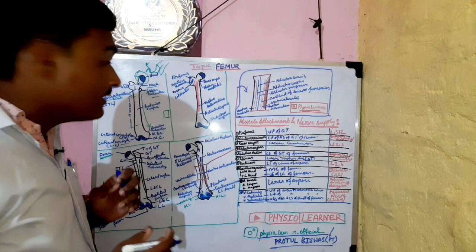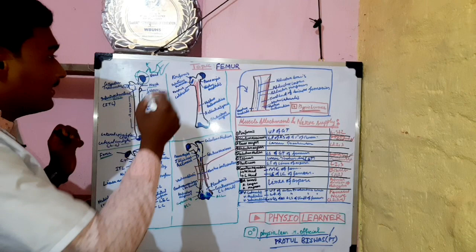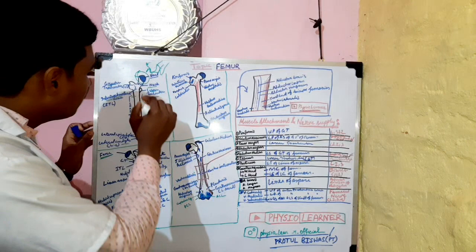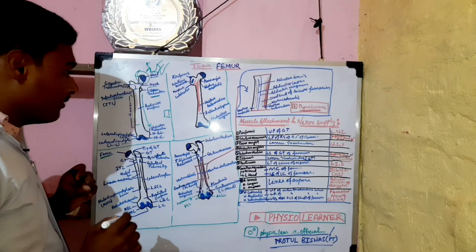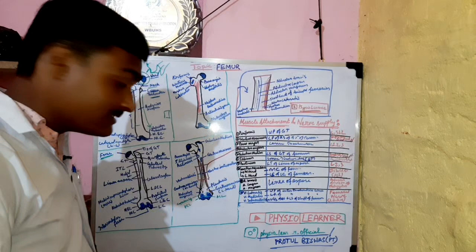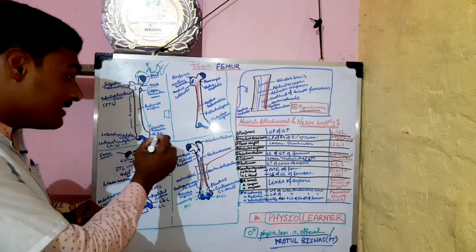In the anterior view, we can see the head of the femur and the neck. This is the lesser trochanter and the intertrochanteric line. You can see the anterior surface, and on the medial side you can also see the adductor tubercle, medial epicondyle, and medial condyle.